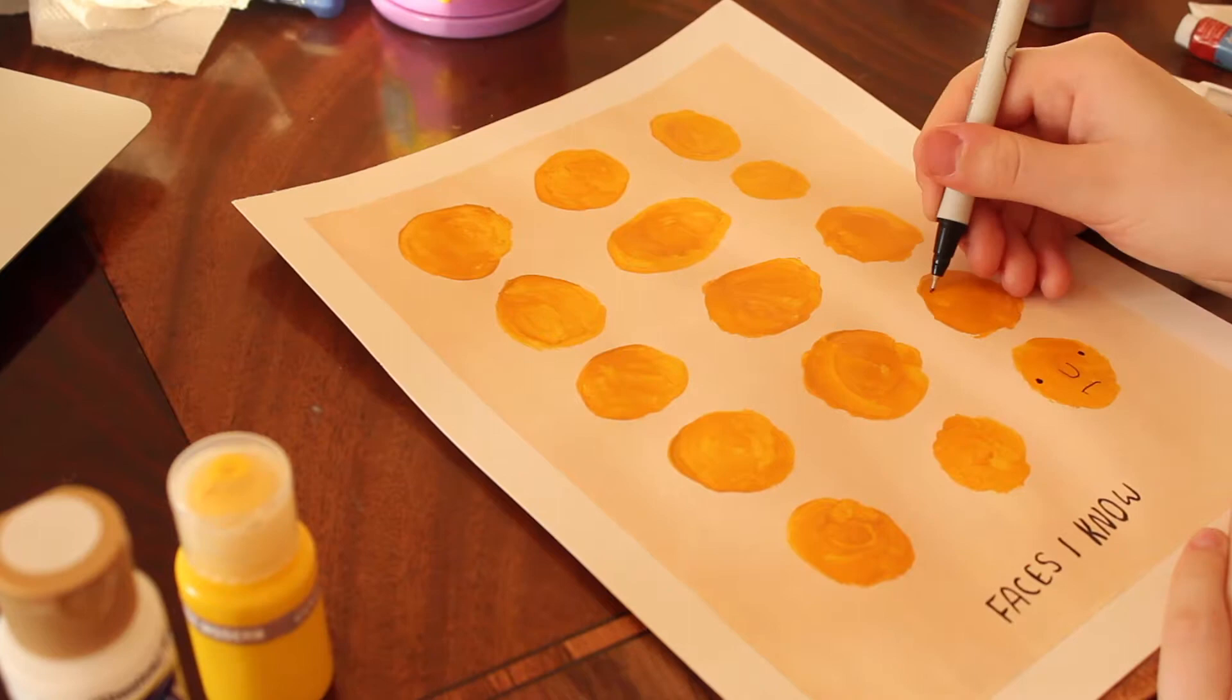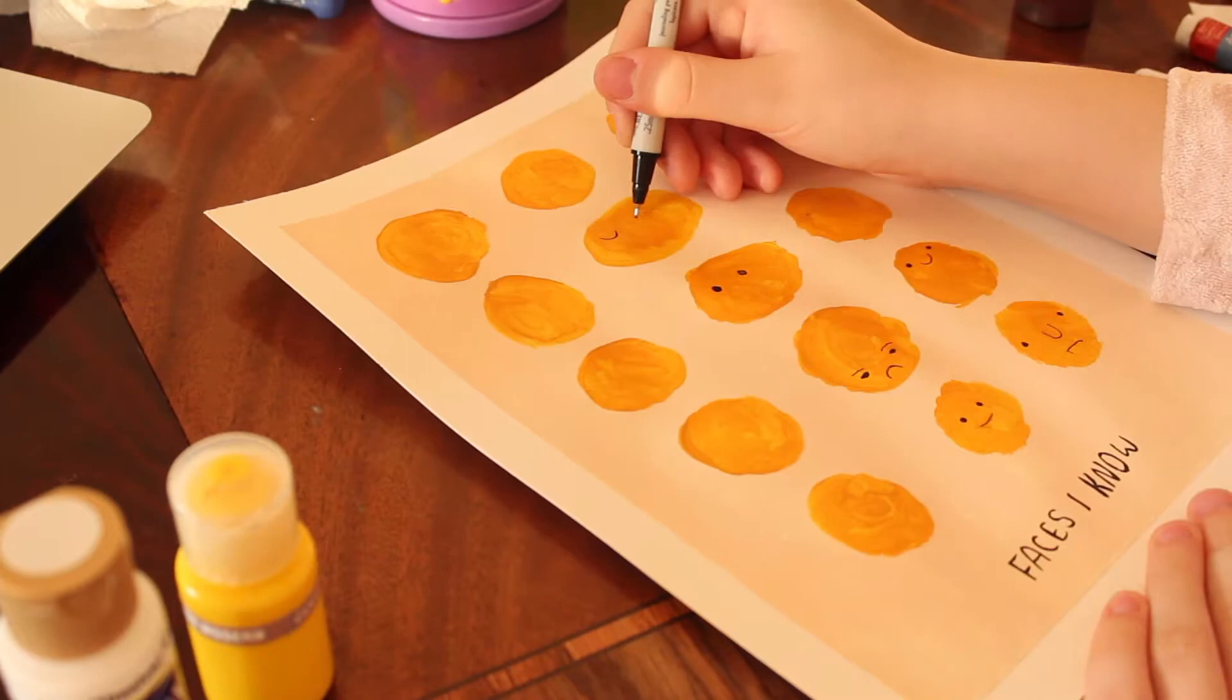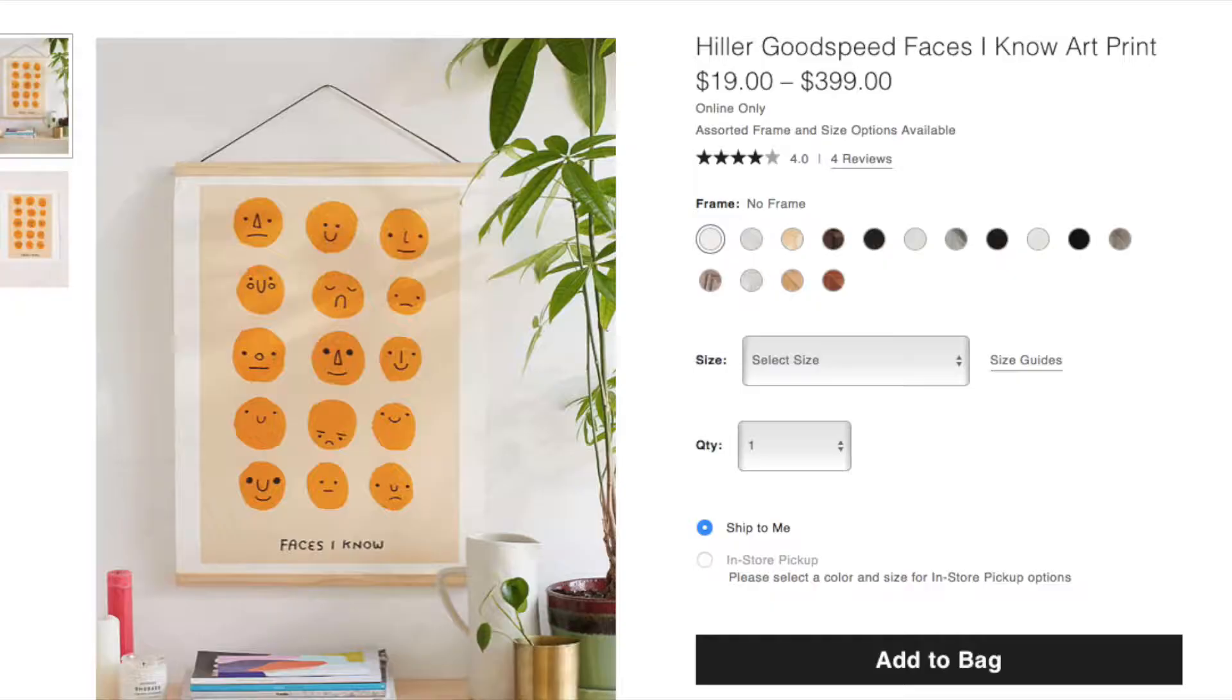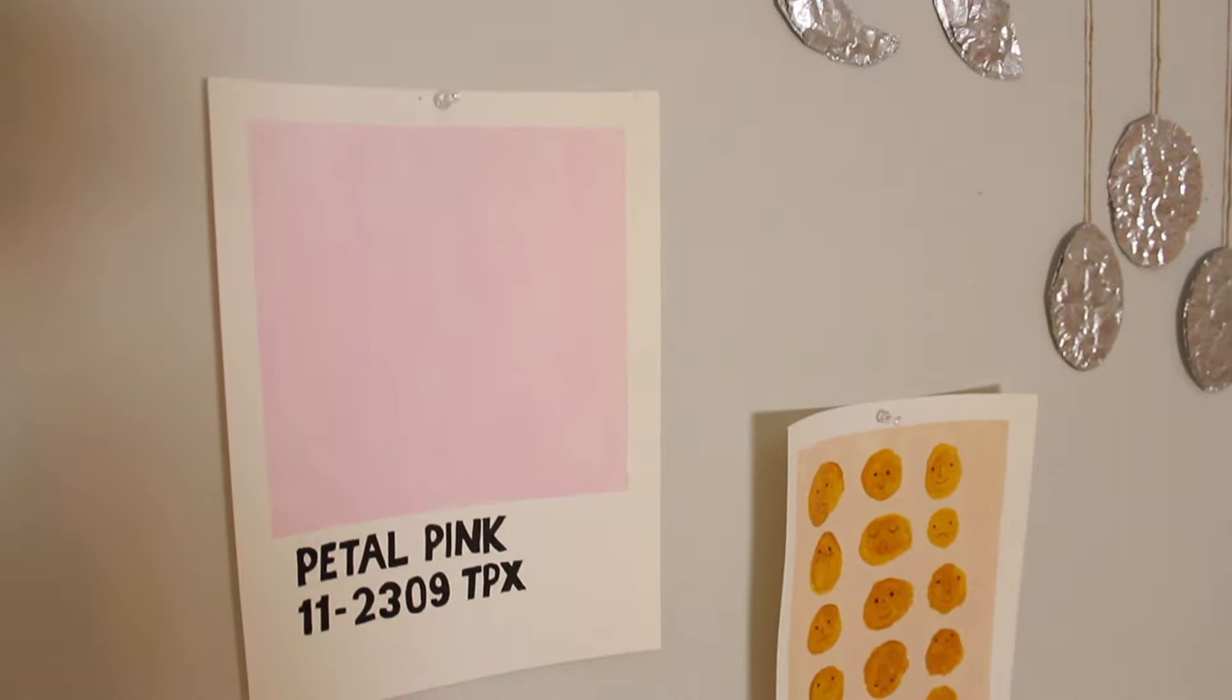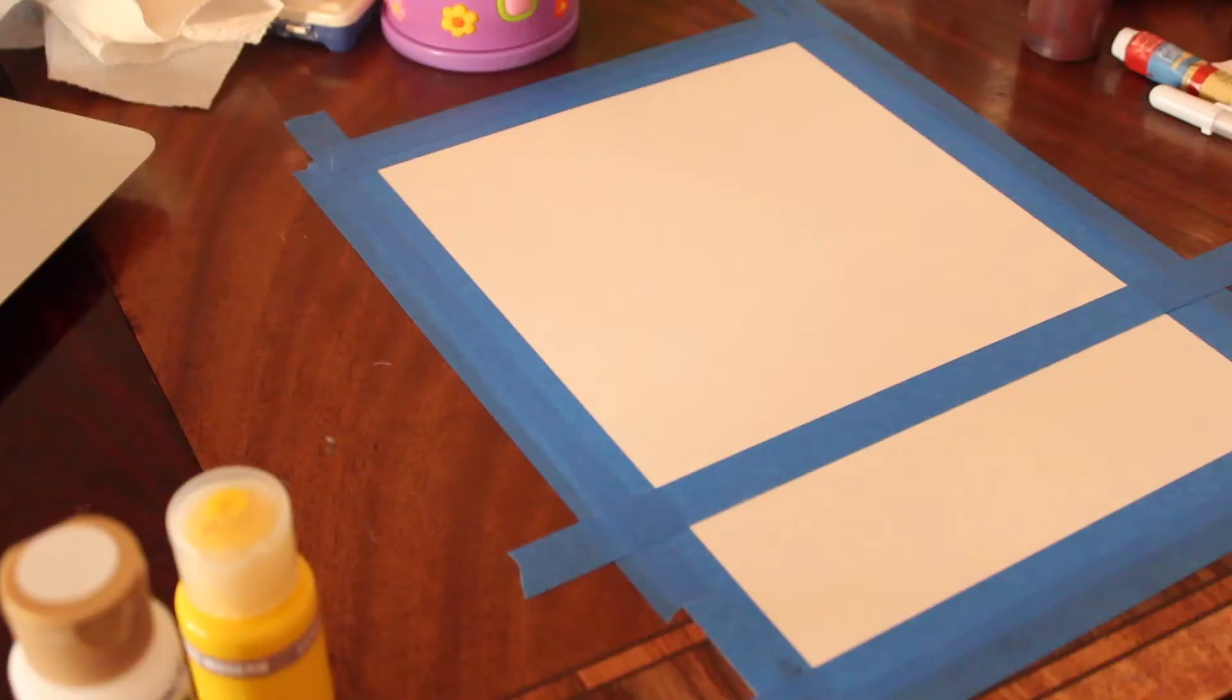Leave a little space at the bottom for writing. I took a pen, though I'd suggest going in with pencil first because mine slanted upwards. You're just going to write "Faces I know." I tried to copy his handwriting. In all the little dots you're going to make fun little faces with a black pen using a photo reference.